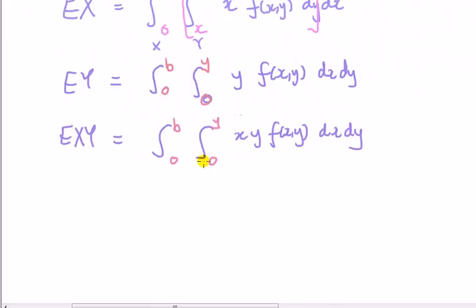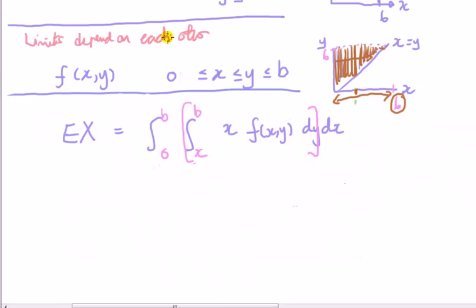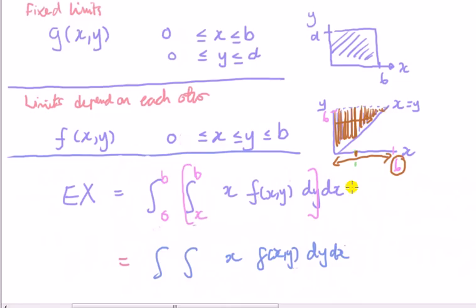Now, not to forget what I said earlier, I want to talk about change of integration. So if we go back to the expected value of x here, what I want to do is write down the expected value of x. This is for the second case where limits depend on each other, and just scribble down the case where the limits do not depend on each other.